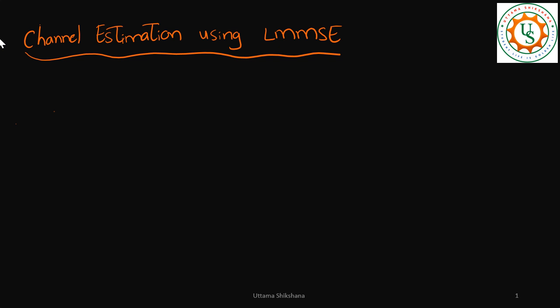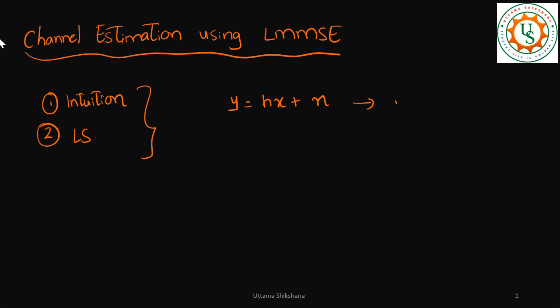So up till now, what we have considered is the intuition-based solution, then we saw the D-square-based solution. For that I will just take the system model for one particular subcarrier: y is equal to hx plus n. This is just a single equation, not a vector.